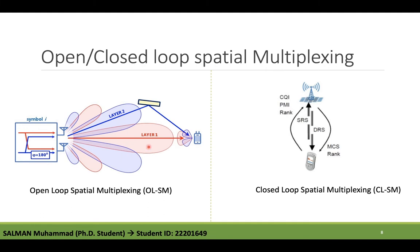Closed-Loop Spatial Multiplexing is similar to the open-loop version but has feedback incorporated. A Precoding Matrix Indicator (PMI) is fed back from the UE to the base station. This enables the transmitter to precode the data to optimize transmission and enables the receiver to more easily separate different data streams. Before explaining 'without CDD' and 'with CDD,' let me explain what CDD is.